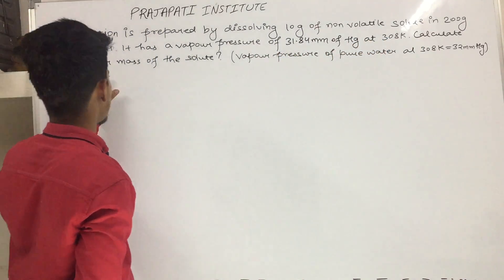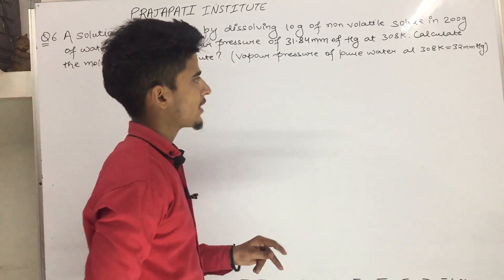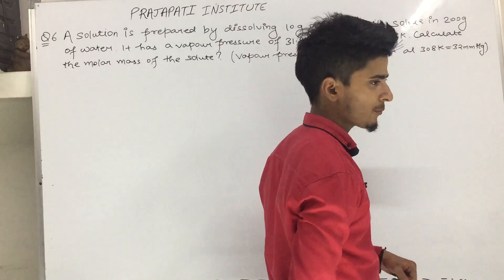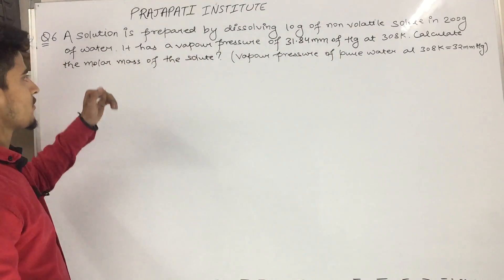Calculate the molar mass of the solute. We have the vapor pressure of pure water at 308 Kelvin is 32 mm of Hg. We have to find the molar mass of the solute.